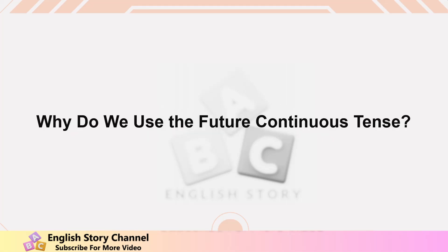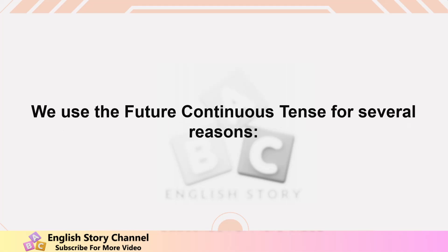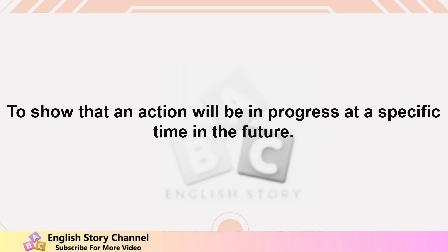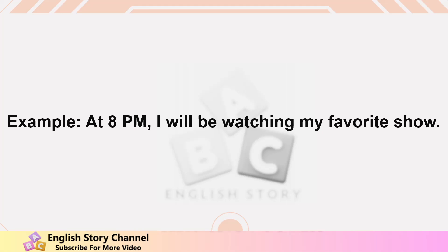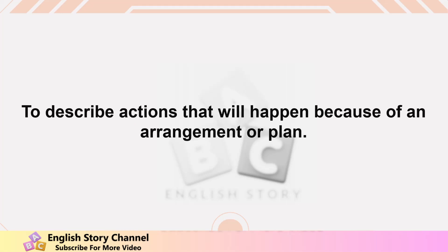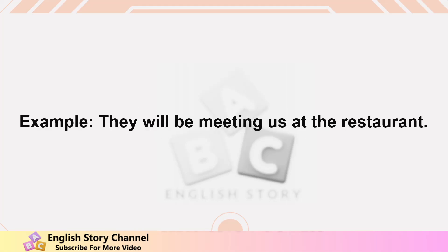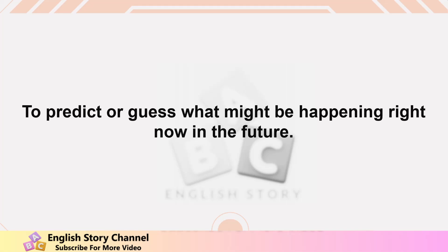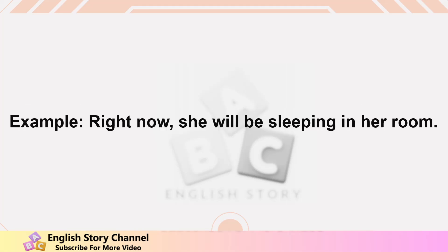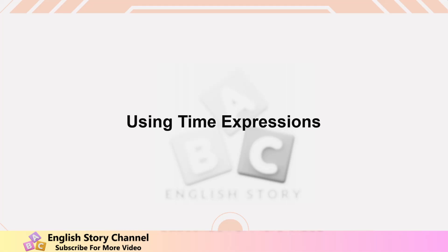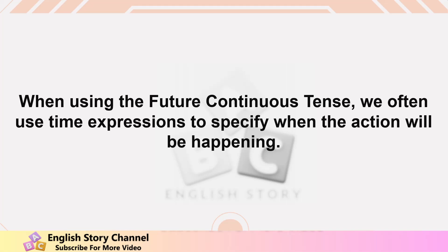Why do we use the Future Continuous Tense? We use it for several reasons. To show that an action will be in progress at a specific time in the future — example: At 8 p.m., I will be watching my favorite show. To describe actions that will happen because of an arrangement or plan — example: They will be meeting us at the restaurant. To predict or guess what might be happening right now in the future — example: She will be sleeping in her room.